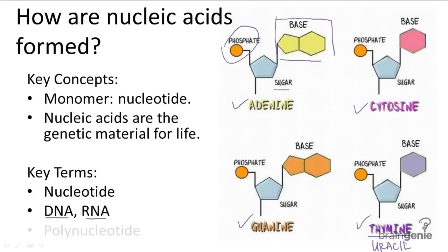When nucleotides bond together, they form long chains, and the sugar and phosphate form a backbone and leave the bases to interact with each other. These long chains are called polynucleotides, so DNA and RNA are both sometimes called polynucleotides. There will be more about how these nucleotides form DNA and RNA in a different video.